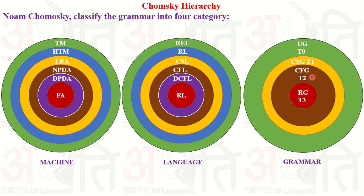To summarize: regular grammar generates regular language, accepted by finite automata. Context-free grammar generates context-free language or deterministic context-free language, accepted by non-deterministic or deterministic pushdown automata. Context-sensitive grammar is Type 1, generates context-sensitive language, accepted by Linear Bounded Automata. Unrestricted grammar or Type 0 generates recursive or recursively enumerable language, accepted by halting Turing machine or Turing machine. This diagram is simple but very powerful as it captures all these relationships in one place — that is the Chomsky Hierarchy.